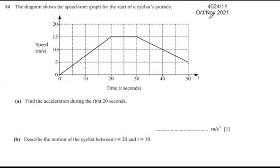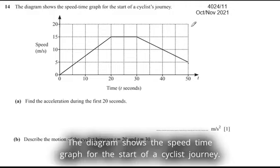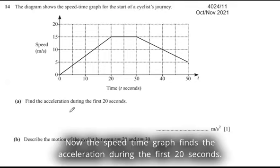Question number 14, paper 1 grade 1, October 2021. The diagram shows the speed-time graph for the start of a cyclist's journey. Part (a): Find the acceleration during the first 20 seconds.